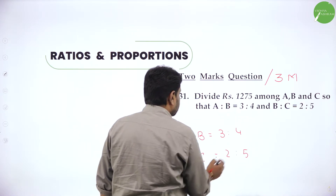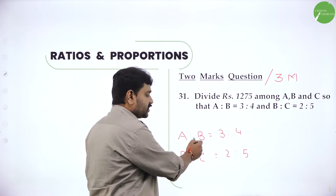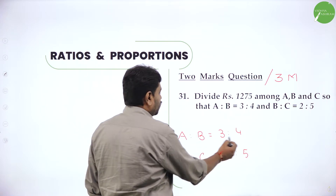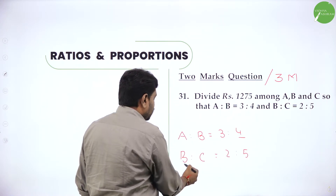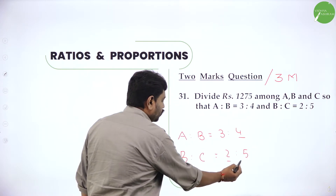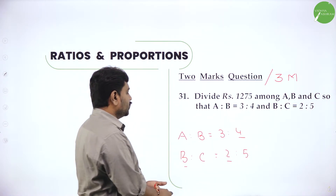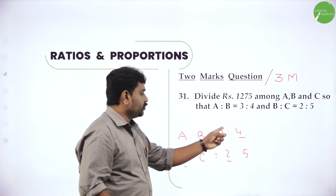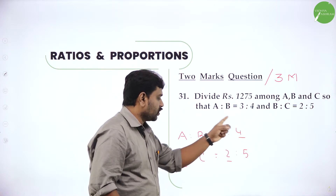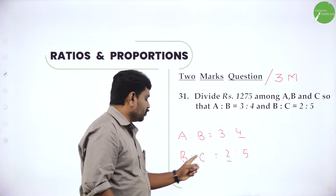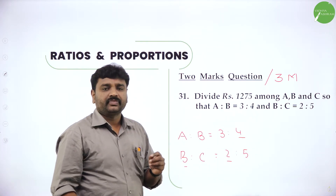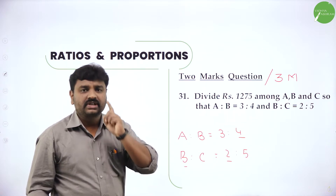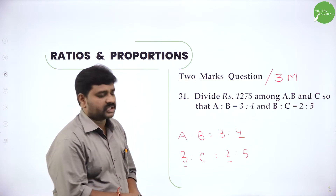Dear students, in the first ratio, B is what? 4. And here B is what? 2. In the first ratio B value is 4. In the second ratio B value is 2. They are not same. First our task is to make them same.